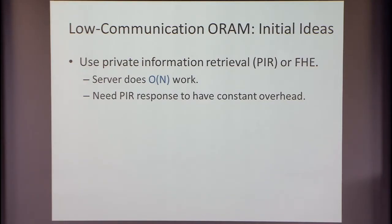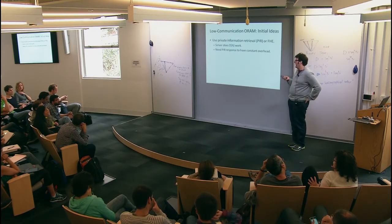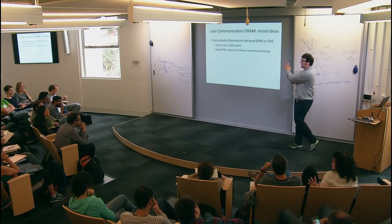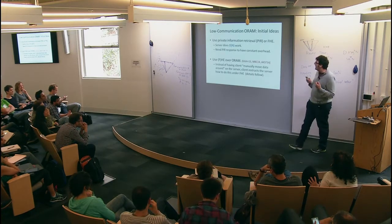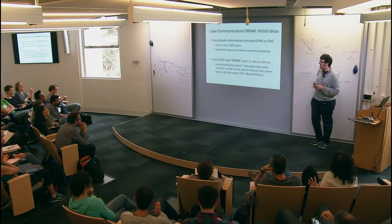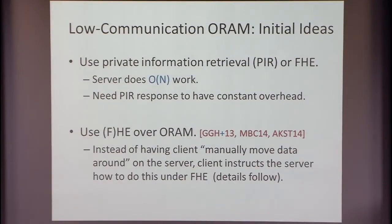This marrying of ORAM and PIR also plays a role if you consider PIR writing. The main thing is we want to get rid of this order-n work. As mentioned, the solution will be to somehow marry ORAM and PIR. We're going to do some homomorphic encryption over ORAM. There are previous works that have thought about this. The idea is instead of the client manually moving data around on the server, the client will instruct the server on how to move the data around under homomorphic encryption. That's the high-level idea.